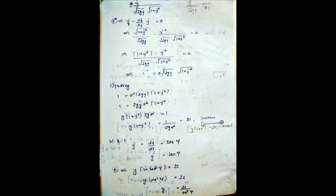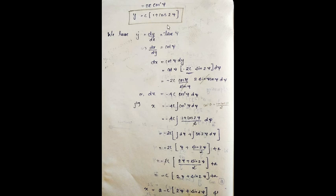Using the identity cos squared θ equals (1 + cos 2θ)/2, we get y equals c times (1 + cos 2ψ). To find x, since y_dot equals tan ψ, the reciprocal gives dx equals cot ψ dy. Differentiating y and substituting, we get dx equals minus 4c cos squared ψ dψ. Integrating using cos squared θ equals (1 + cos 2θ)/2 and simplifying gives x equals minus c times (2ψ + sin 2ψ).